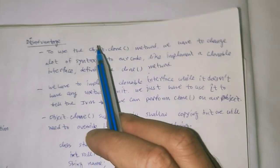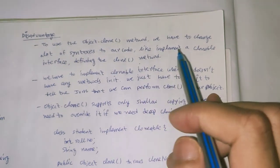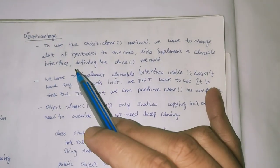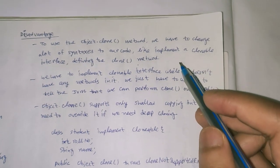Today we are discussing the disadvantages of object cloning. To use the object clone method we have to change a lot of syntaxes in our code, like implementing a clonable interface and defining the clone method.